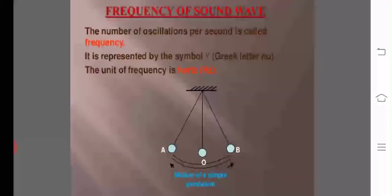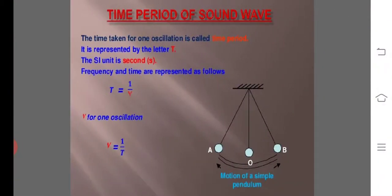The number of oscillations per second is called frequency. It is represented by symbol nu. The unit of frequency is hertz. The time taken for one oscillation is called time period. It is represented by letter t. The SI unit is second.